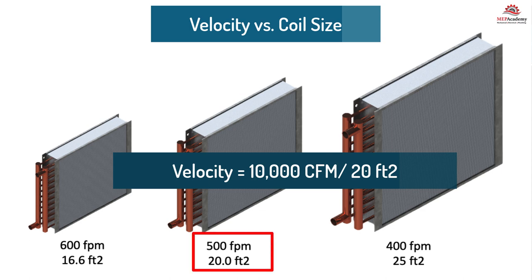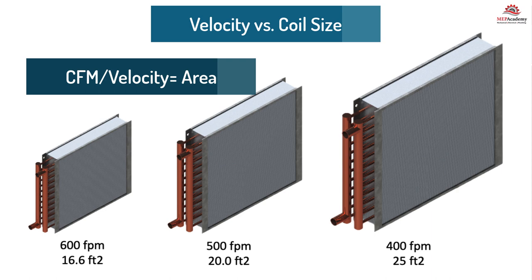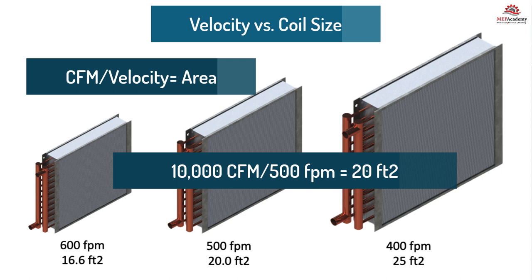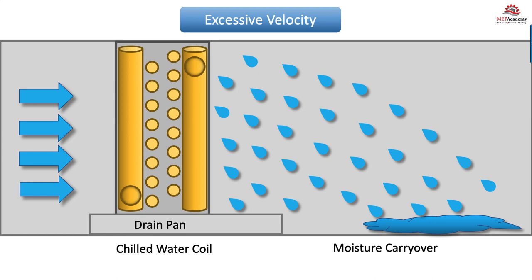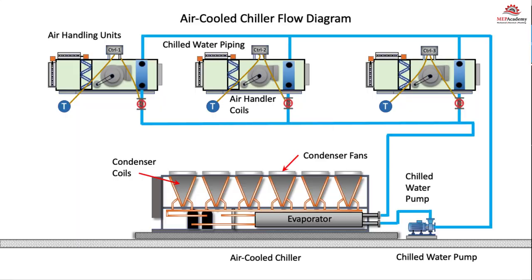We can also use this formula to determine the required face area of the coil by taking CFM and dividing it by velocity. Face Area (sq ft) = CFM ÷ Velocity (FPM). For example, 10,000 CFM ÷ 500 FPM = 20 sq ft face area. If velocity is too high, condensate can be blown downstream of the drain pan. Moisture carryover can leak out of the ductwork and cause damage to the building or within the air handler.